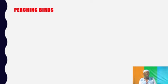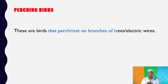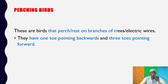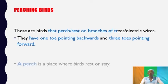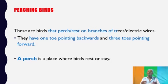Perching birds. The word perch means to rest on either electric wires or tree branches. Perching birds have one toe pointing backwards and three toes pointing forward. A perch is a place where birds rest or stay.